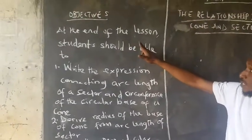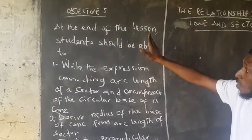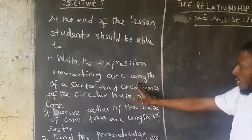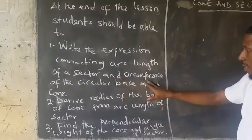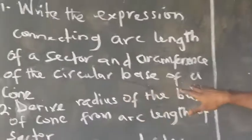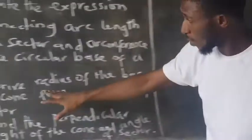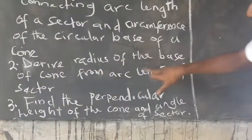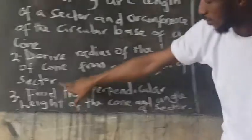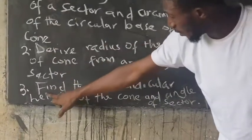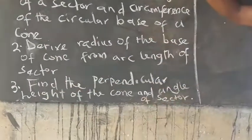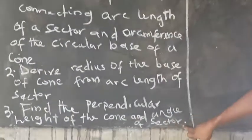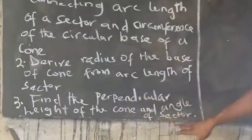At the end of this first period, the student should be able to: one, write the expression connecting the arc length of the sector and the circumference of the circular base of the cone; two, derive the radius of the base of the cone from the arc length of the sector; three, find the perpendicular height of the cone from the sector and the angle of the sector.